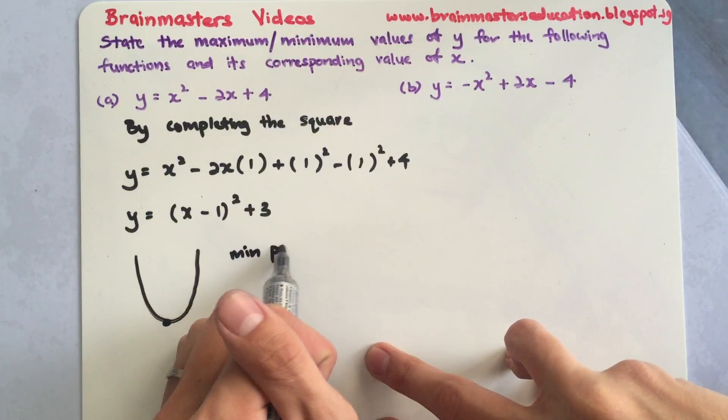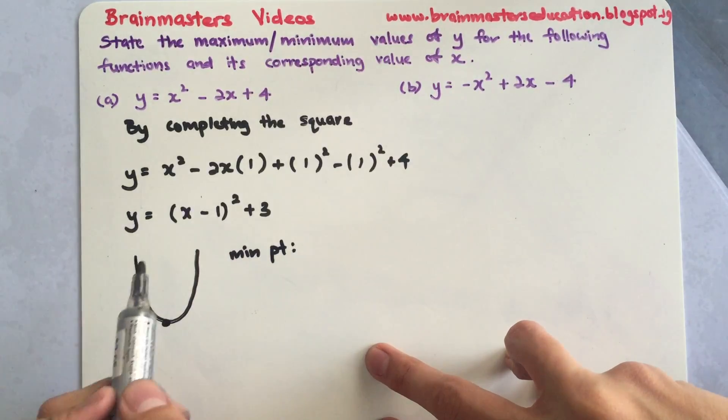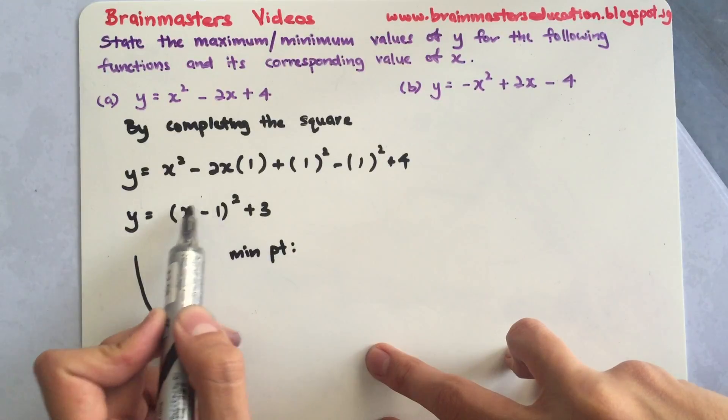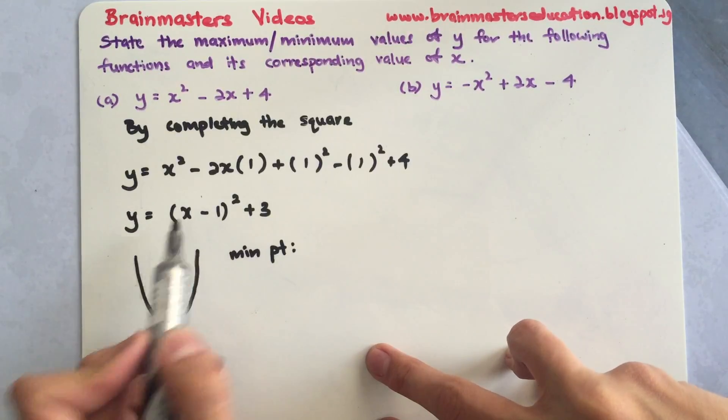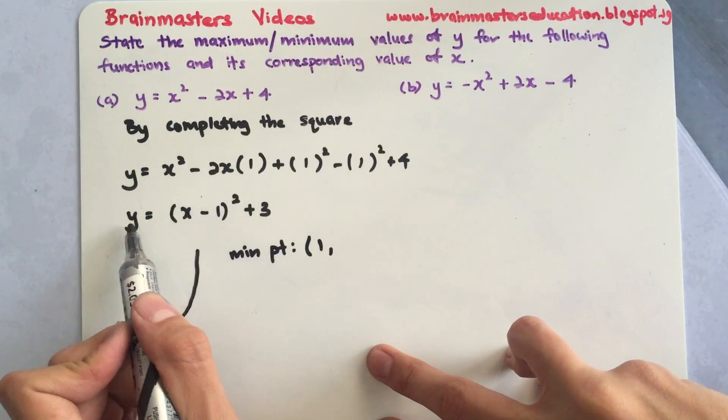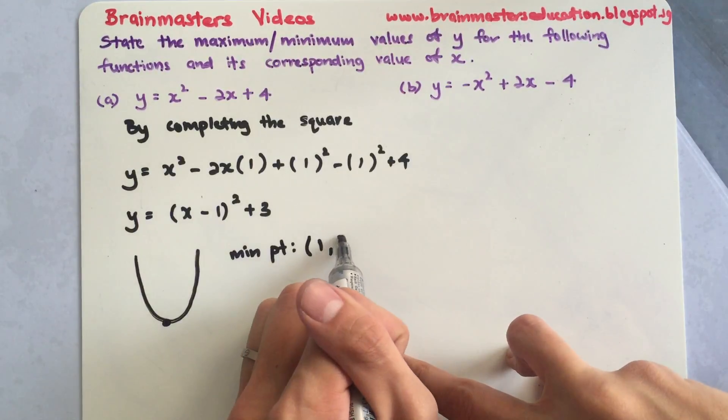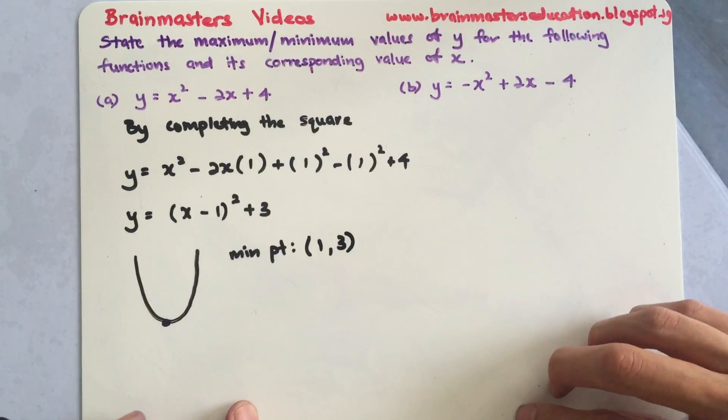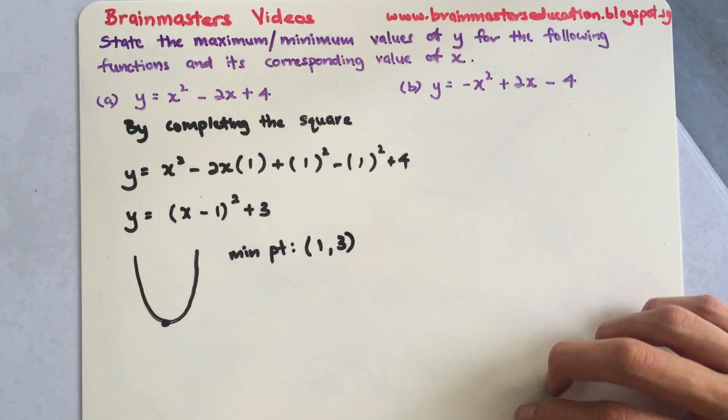For a minimum point, we have to achieve 0 here. In order to achieve 0, I need to let x become 1. Once this becomes 0, my y will be equal to 3. So my minimum point is 1 and 3.